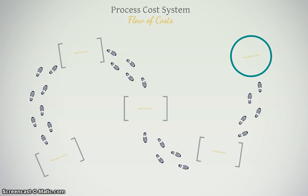A process cost system is the second basic type of accounting costing system, the first being job order costing. There are similarities between the two, but also some significant differences. A process cost system is used by a company that manufactures a uniform or very similar product — we're making the same thing day in and day out, and one product is no different than the next.